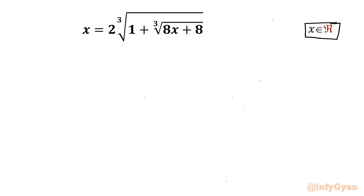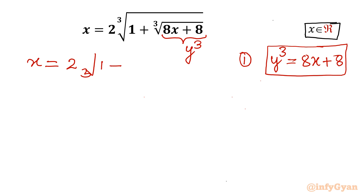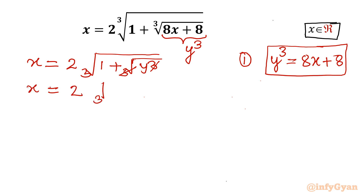I will begin by writing our substitution straight away. I will consider the radicand term as y cubed. So the substitution is y³ = 8x + 8 — call this equation 1. With this substitution, the original equation becomes x = 2 times the cube root of 1 plus the cube root of y³. Since cube root and cube cancel, we get x = 2 times the cube root of (1 + y).